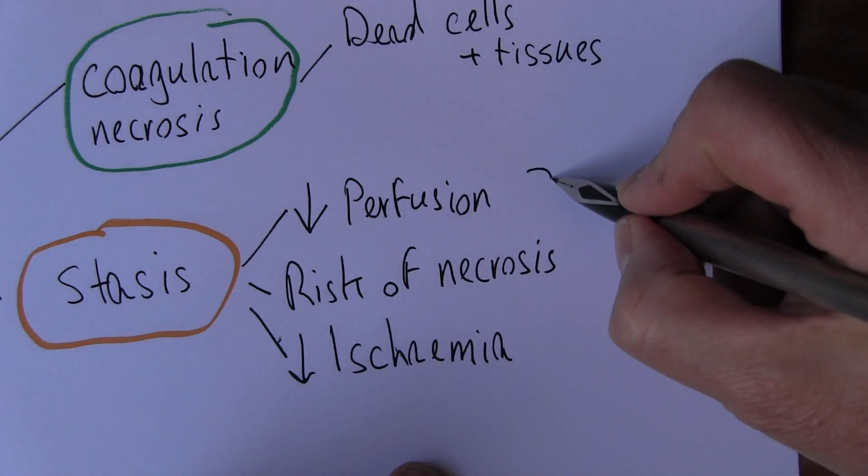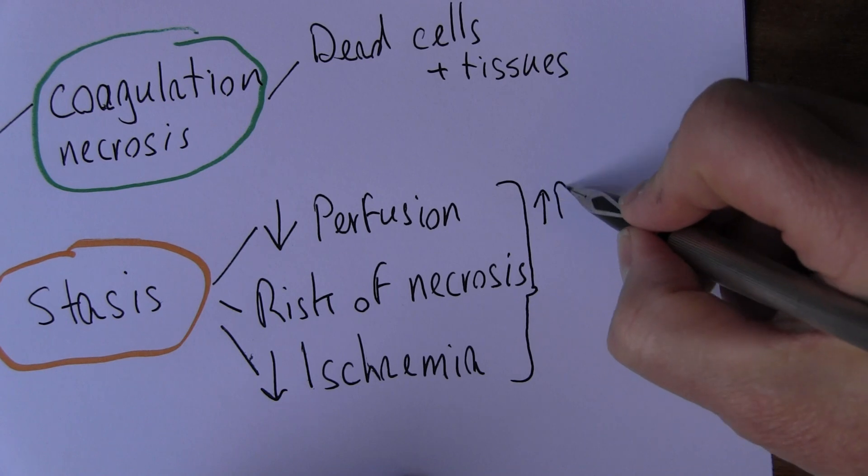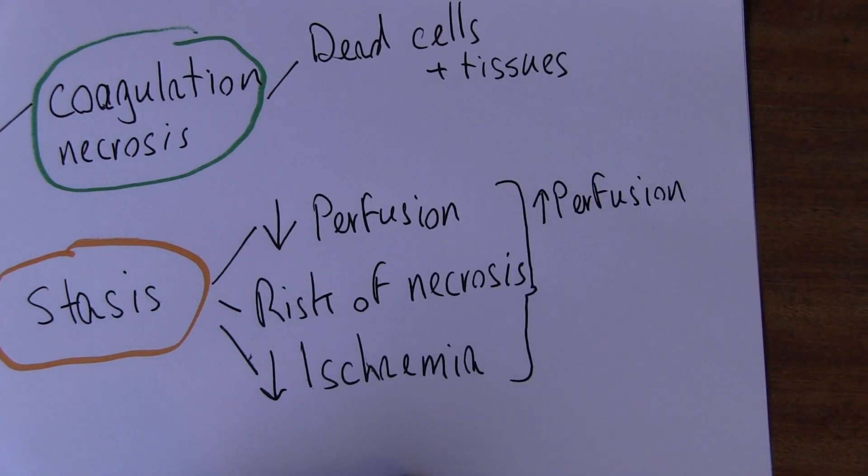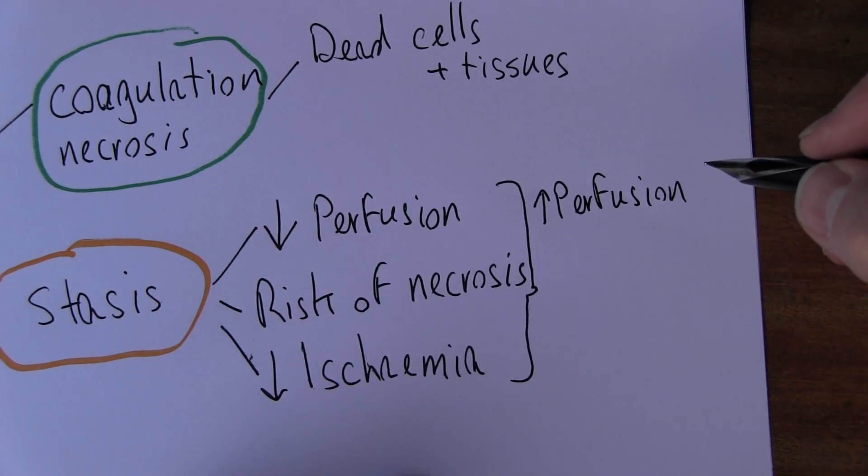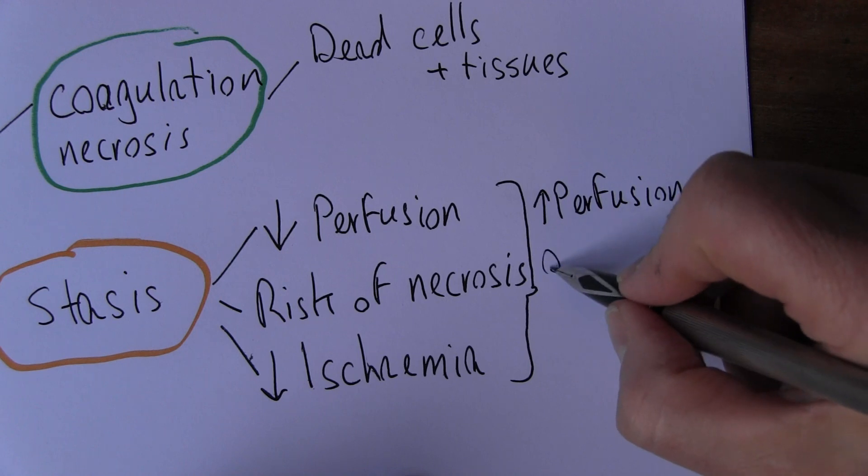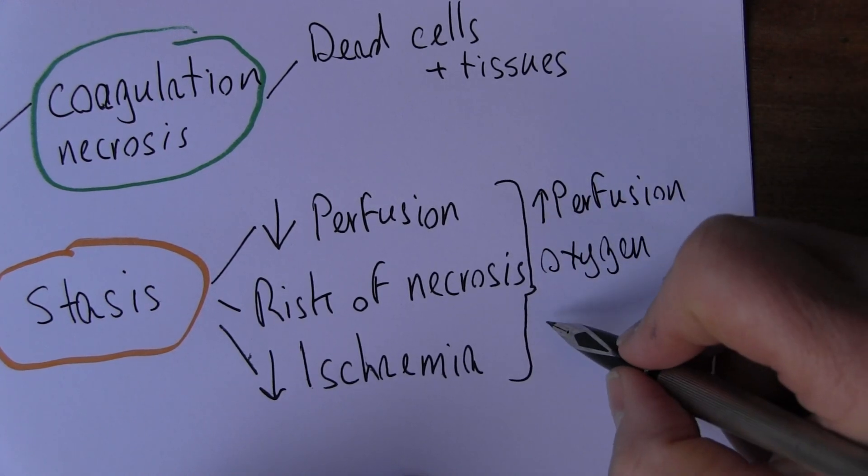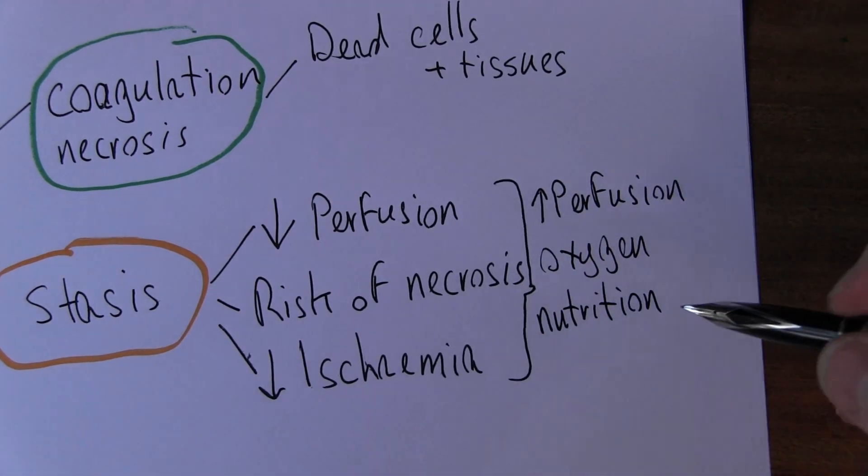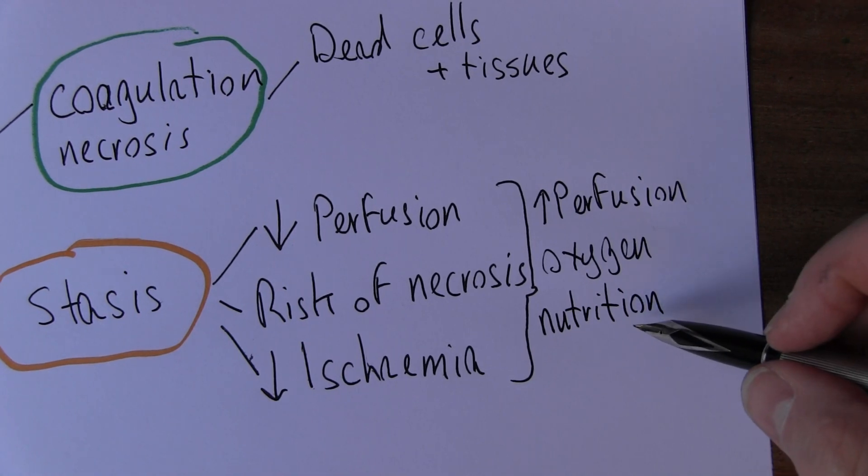And this explains why it's so important locally and systemically to increase perfusion of this area of stasis around the burn. That will maintain oxygen, and the perfusion will also bring nutrition, because burns are very energy-requiring wounds to heal. They need a lot of energy to heal.